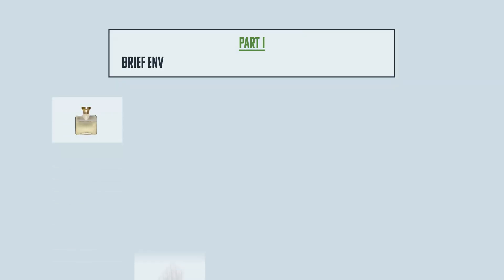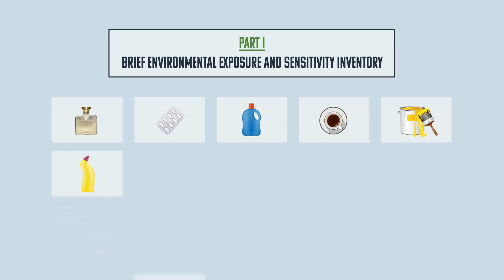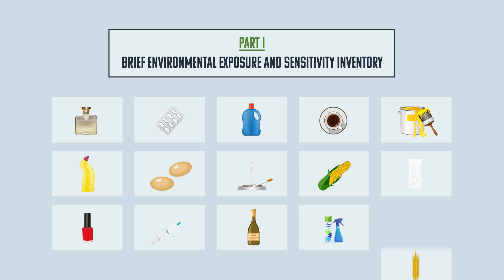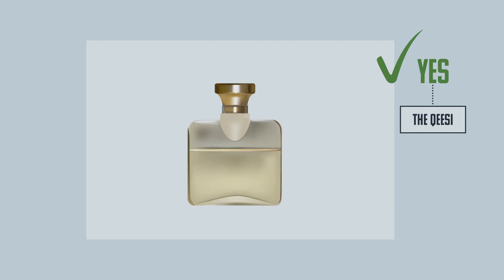Part 1 is the Brief Environmental Exposure and Sensitivity Inventory, known as the BREEZY for short. The BREEZY is a scientifically published validated tool consisting of three yes-or-no questions. It can be used in large research studies, in clinical practice, or by anyone interested in understanding if they have chemical intolerances. An answer of yes to any one question should be followed by completing a more comprehensive survey, the QEASY.